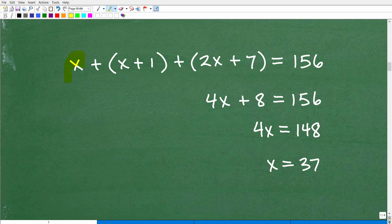So what do you want to do? Well, let's go ahead and combine like terms. We'll add up all our x's, so x and x and 2x, that gives me 4x, and then I have what? I have 1 and 7, that gives me 8. So I have 4x plus 8 is equal to 156.